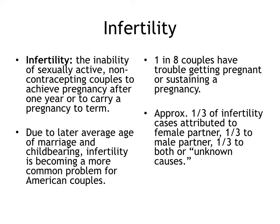Many people who pursue alternate forms of family building — although certainly not all — will do so because of a diagnosis of infertility. Infertility is defined as the inability of sexually active, non-contraceptive couples to achieve pregnancy after one year, or to carry a pregnancy successfully to term. After six months of trying, 60% of couples will conceive without medical assistance. For those who can't, a diagnosis of infertility may be appropriate.